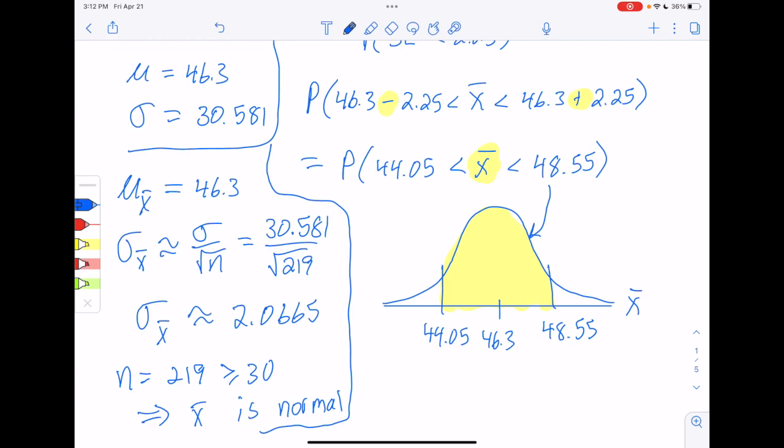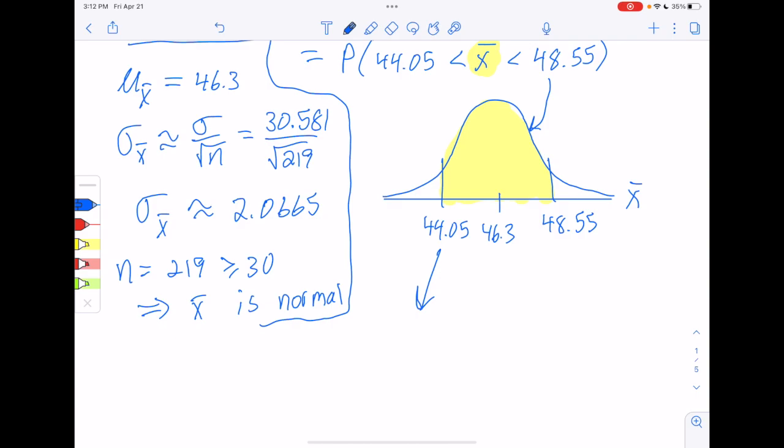So to do that, we want to use normal CDF. To use normal CDF, we need z-scores. So let's start off finding the z on the left. We'll call that z1. That would be 44.05 minus the mean, 46.3. And then here's the tricky part. When you go to divide by the standard deviation, make sure that you use the standard deviation for x bar, not the original sigma. So we want this 2.065. We do not want that 30.581 when it comes to the denominator. So 2.0665. Just remember that in the calculator, you need parentheses around the numerator. And then round that to exactly three decimal places. That works out to be negative 1.089.